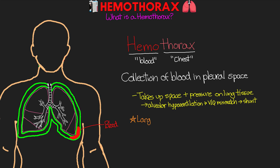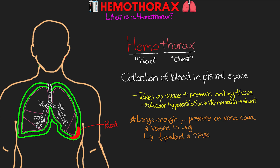If the hemothorax is large enough, it can also put hydrostatic pressure on both the vena cava and the vessels in the lung tissue itself. This decreases preload and also increases our pulmonary vascular resistance — sort of the afterload on the right side of our heart — and can really lead to decreased cardiac output, hemodynamic instability, and potentially cardiac arrest. This is something that we refer to as tension hemothorax, very similar to our tension pneumothorax.